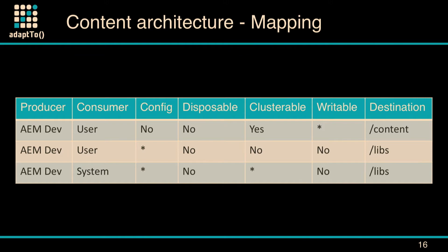As a short example: if the producer is the AM developer and the consumer is the user, for non-configuration, non-disposable, cluster-visible content, that should go to slash content. And if the producer is the AM developer consumed by the user, for non-disposable, non-cluster-visible, and non-writable content, that should be libs. The full mapping is at the end of the presentation.